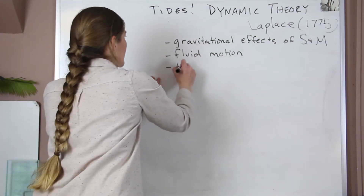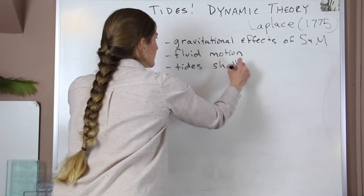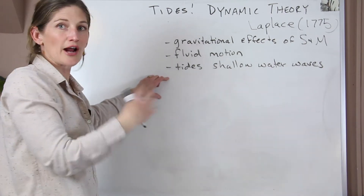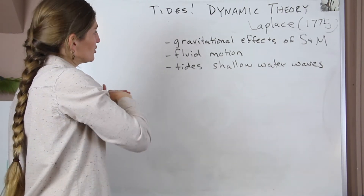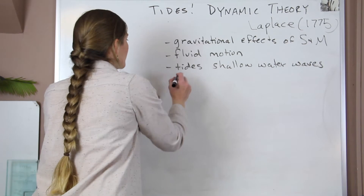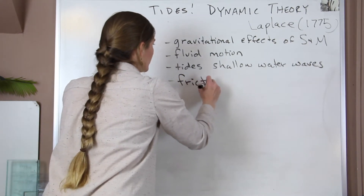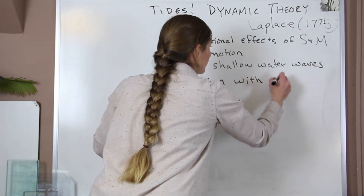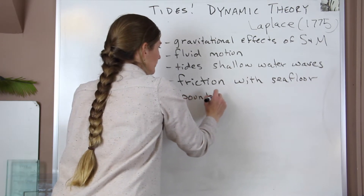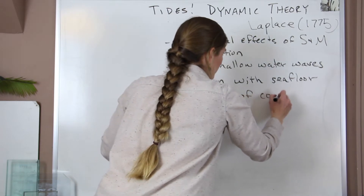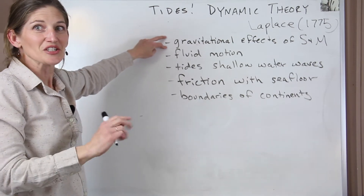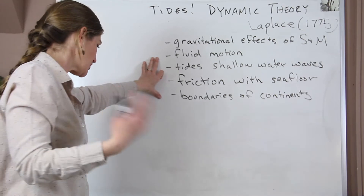Our tides are shallow water waves with wavelengths that are half the circumference of the earth, so these waves are always being affected by the earth, the sun, and the moon. The tides also experience a lot of friction with the seafloor and collide with the boundaries of the continents. This really helps us go from a hypothetical situation on our geoid to the reality of our much more complex earth.